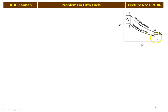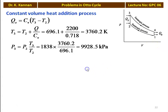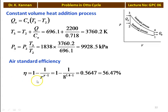The PV diagram shows 1 to 2 isentropic compression, 2 to 3 constant volume heat addition, 3 to 4 isentropic expansion, and 4 to 1 constant volume heat rejection. For constant volume heat addition: Qs equals Cv × (T3 - T2), so T3 equals T2 + Q/Cv equals 696.1 + 2200/0.718 equals 3760.2 Kelvin. P3 equals P2 × T3/T2 equals 1838 × 3760.2/696.1 equals 9928.5 kPa. Air standard efficiency eta equals 1 - 1/8^0.4 equals 0.5647, which is 56.47 percent.